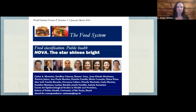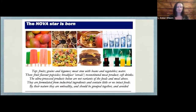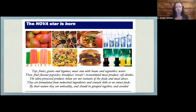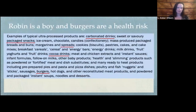Now let's talk about NOVA, the food classification system. Here we have from their publication their examples of good foods — unprocessed foods along the top — and the ultra-processed products below. By their nature, they are unhealthy and should be grouped together and avoided, it says. How did they come up with these categories? They used their intuitions to put together a heuristic. We see the same kind of pattern: Robin is a boy and burgers are a health risk. I've underlined in their description of how they chose the ultra-processed category things that I think are a little bit iffy.